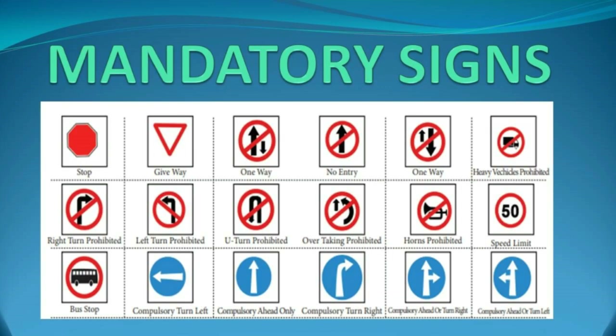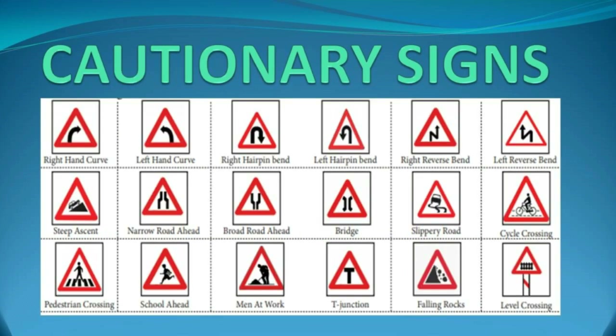Mandatory signs are the first category. Violation of any mandatory traffic sign is an offense punishable by law by the roadways and transport department. They give orders and need to be followed strictly. They are generally circular in shape. Cautionary signs — a total of 40 have been added by the roadways and transport department. Their main function is to warn the driver to take necessary action to manage the situation. They are generally triangular in shape.